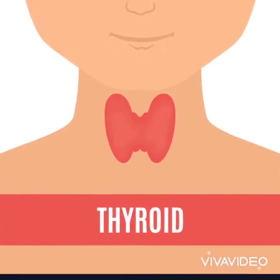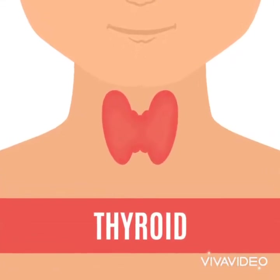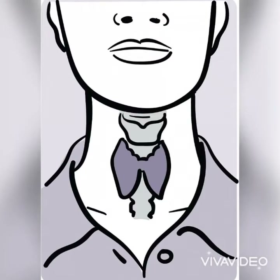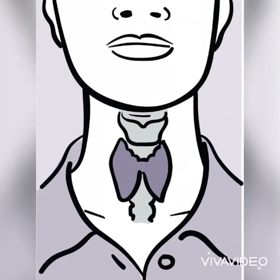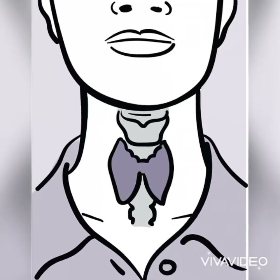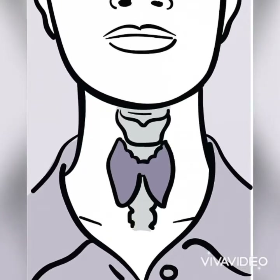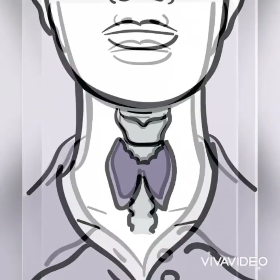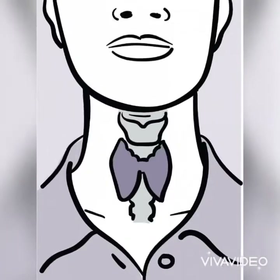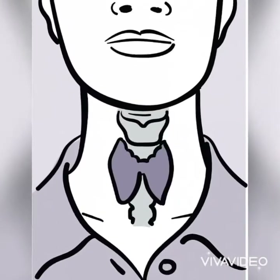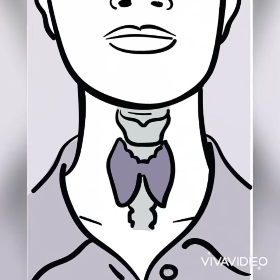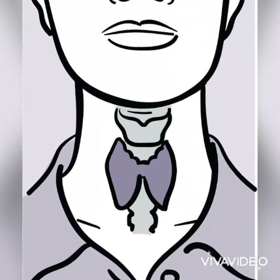Assalamualaikum. Today's topic is the thyroid gland. What is the thyroid gland? It is a small organ located in front of the neck, wrapped around the windpipe — that is, the trachea.